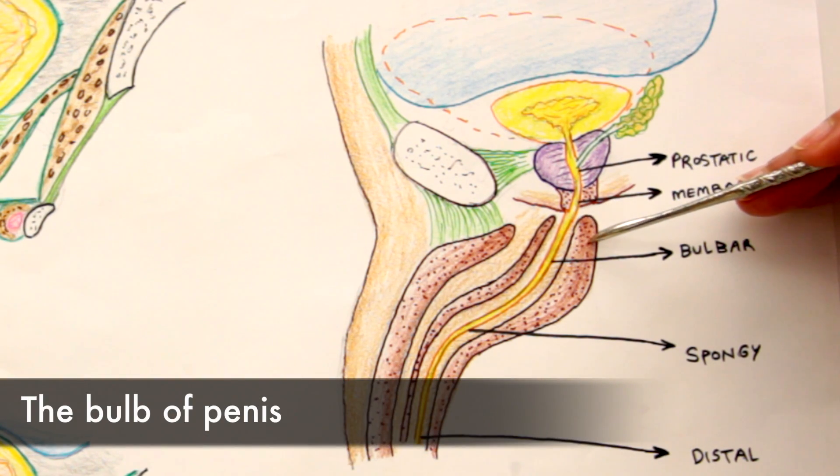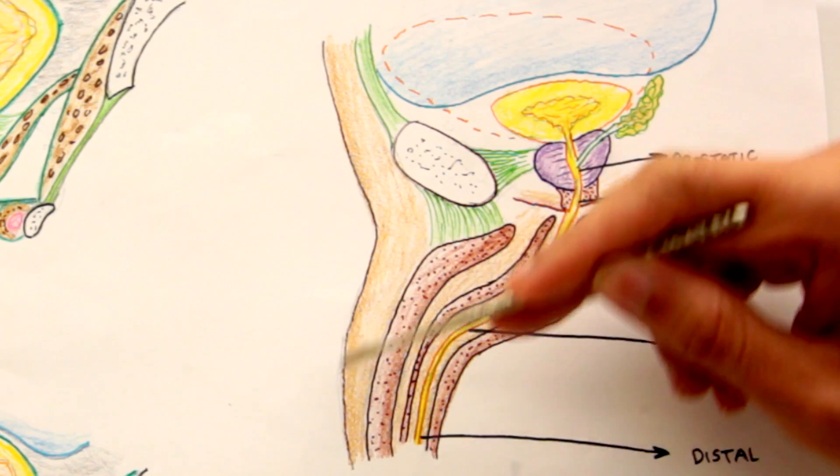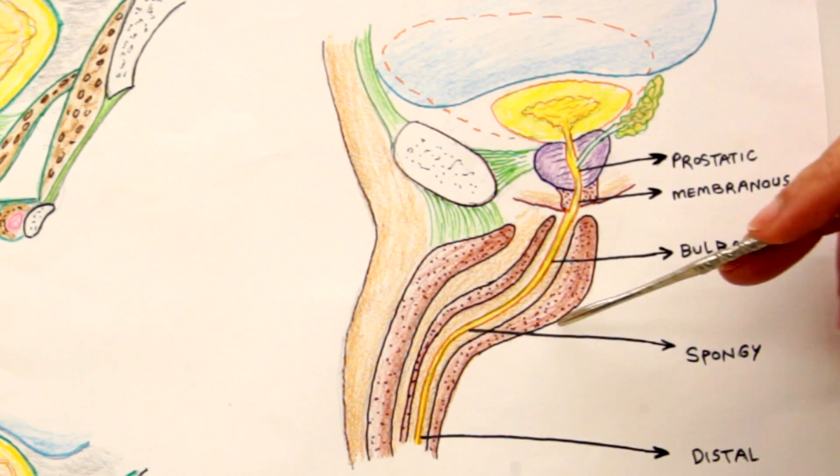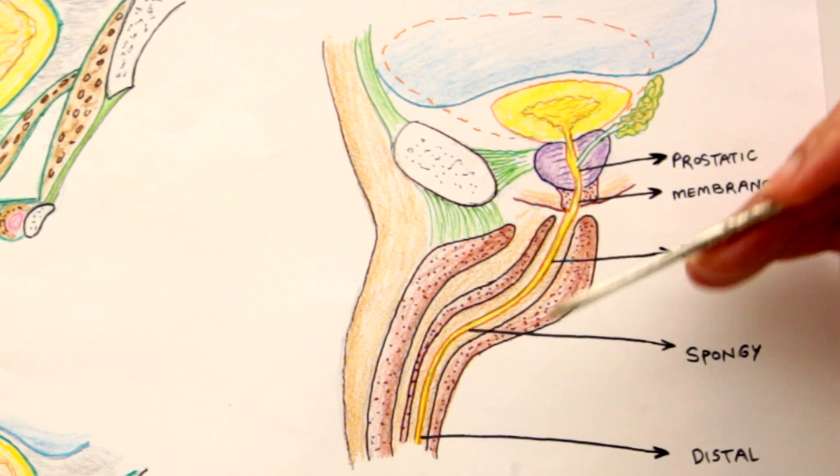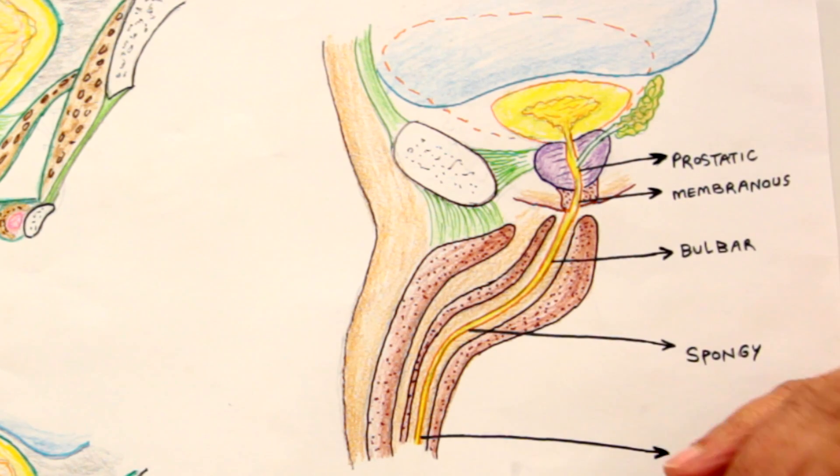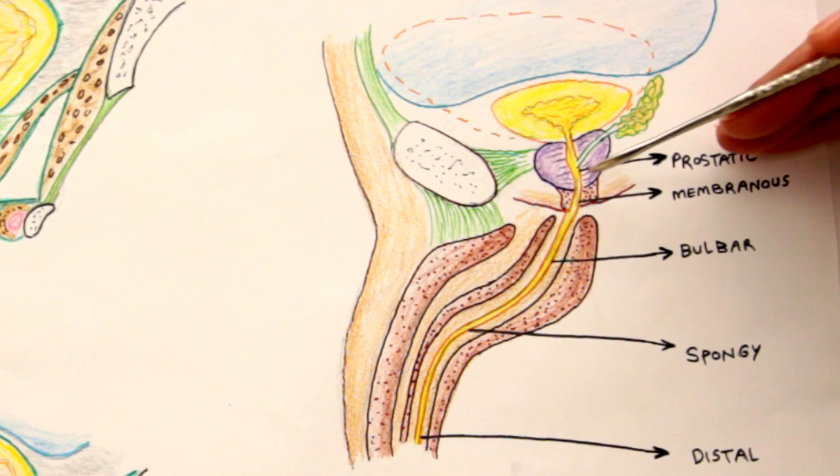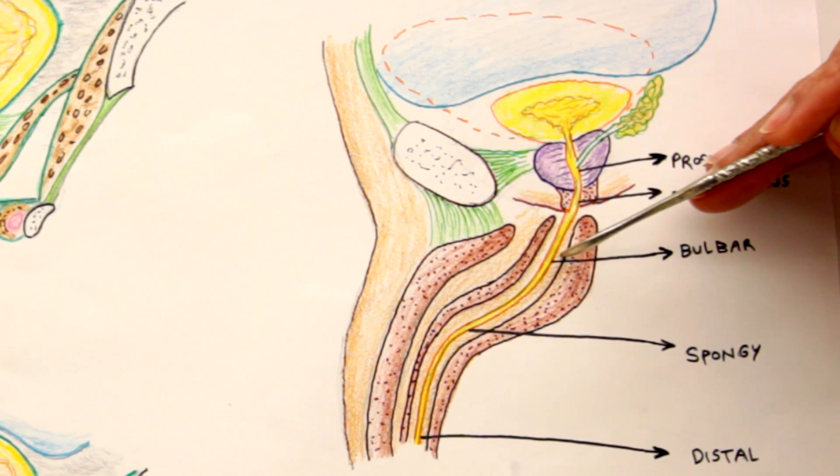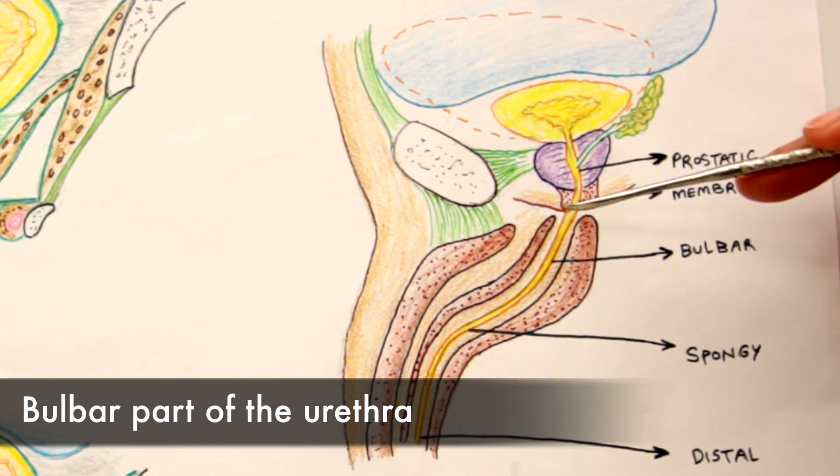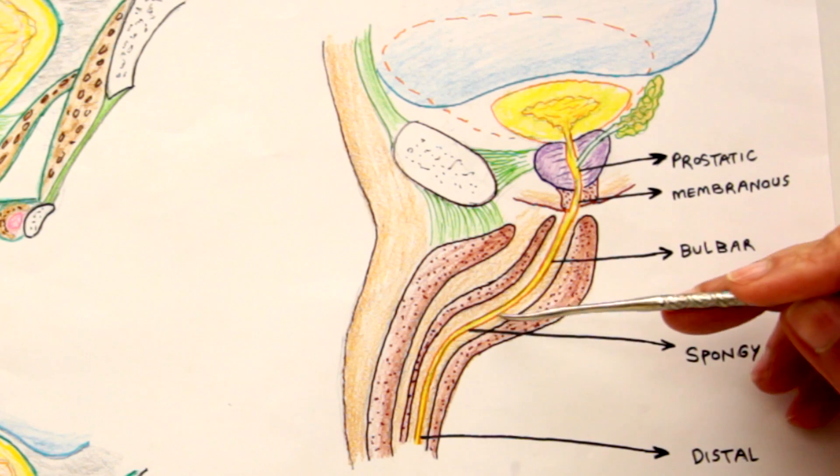This whole area is the perineal region. The penis and scrotum are part of the superficial perineal space or superficial perineal pouch. This region is the deep perineal space or perineal pouch. The membranous part of urethra traverses through the deep perineal space and then emerges in the middle of the bulb of penis. That is the bulbar part of urethra.